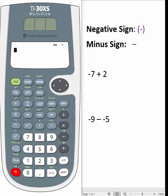For this demonstration, let's enter the problem negative 7 plus 2. We type in the problem in order from left to right, so I'm going to type in a negative 7 plus 2.